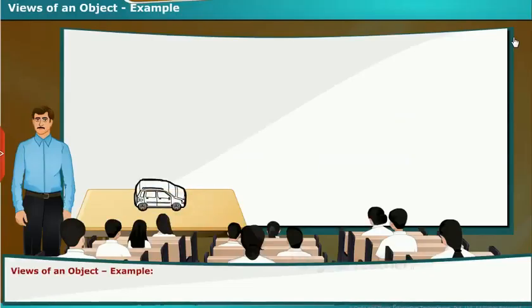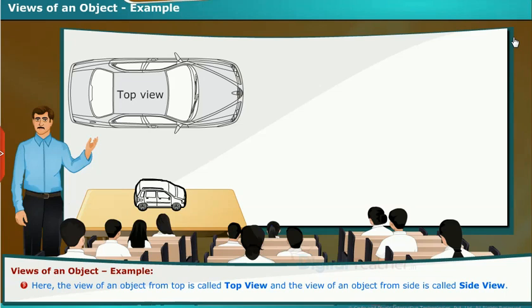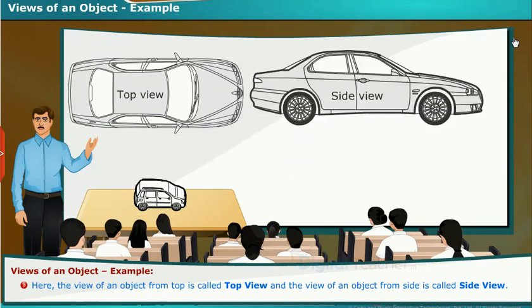Here, we will see the views of an object with an example. Hi, my dear children. We will see the four possible views of an object by taking a toy car as an example. Here, the view of an object from top is called top view. And the view of an object from side is called side view.